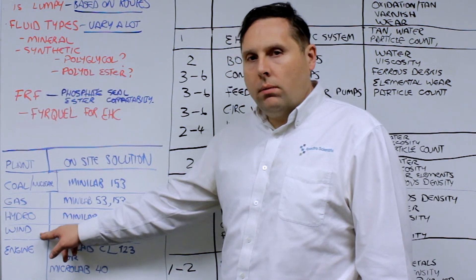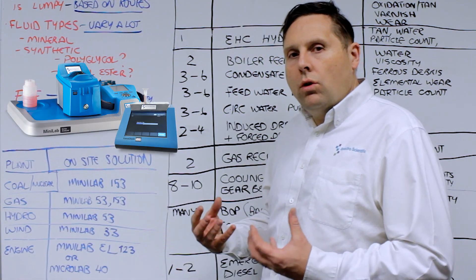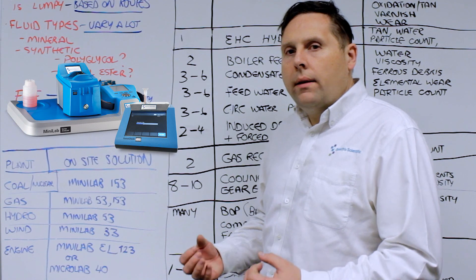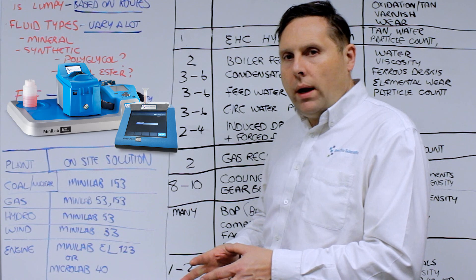If you are working with wind turbine assets, you might want to consider the Minilab 33, which are the portable combo kits that you can take out to the actual location and run your samples straight away there. They only take a small volume of fluid and you can actually operate them right there and then.